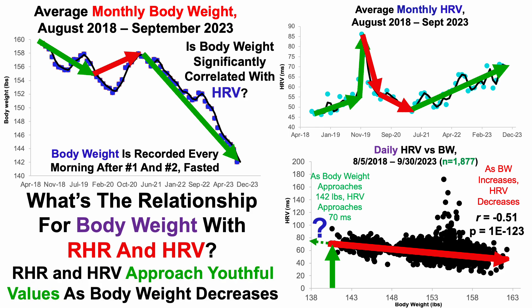So to answer the question — what's the relationship for body weight with heart rate variability and resting heart rate — they approach youthful values as body weight decreases: a higher heart rate variability in conjunction with a lower resting heart rate.